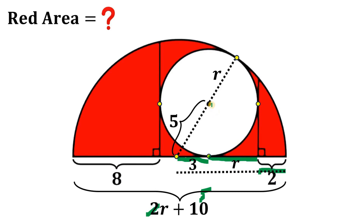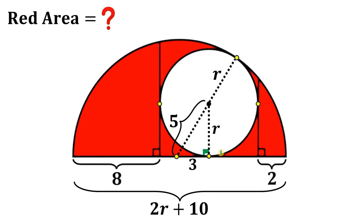From here, we will draw the radius of this circle directly to the point of tangency, because we know this is perpendicular to the tangent line or tangent segment. Now let's focus on this right triangle. Using this right triangle, we can find the value of r. In this right triangle, the hypotenuse is 5, one leg is 3 — this is the famous 3-4-5 right triangle. So even without using the Pythagorean theorem, we can say that the length of r, the radius of this circle, simply equals 4 units.